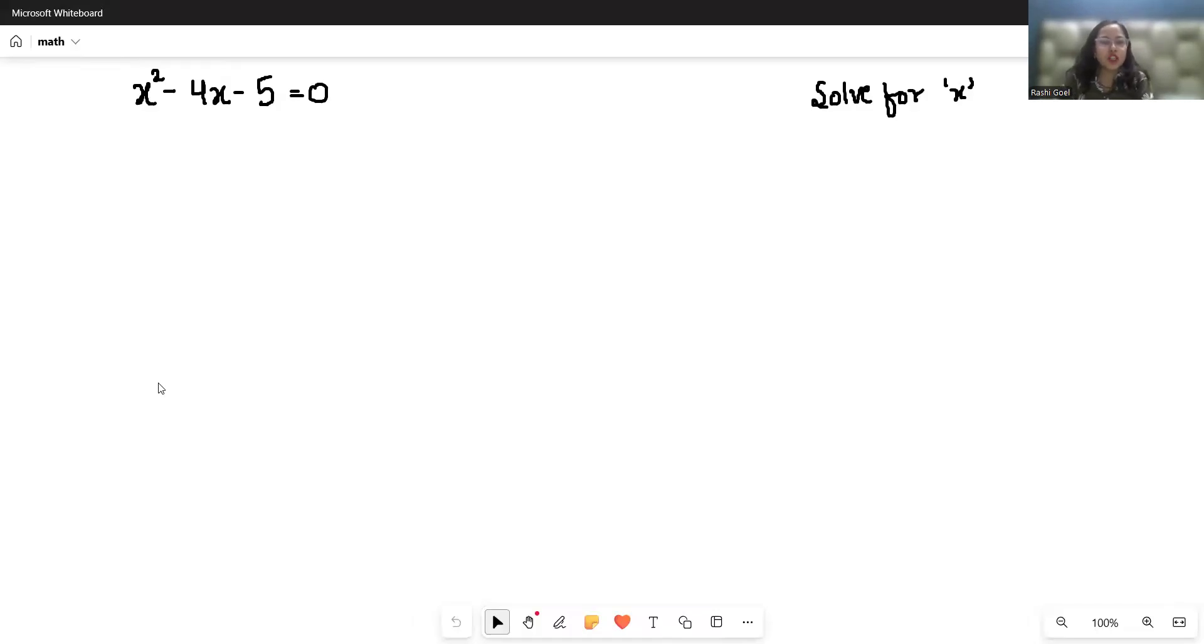Hello everyone, welcome to my channel. We are going to solve this quadratic equation: x² - 4x - 5 = 0, and we have to find the value of x. So let's start with today's video solution.